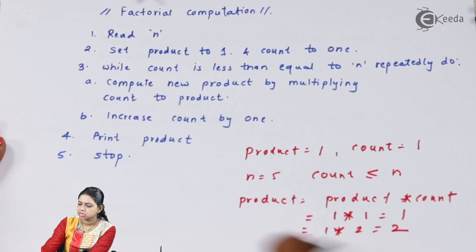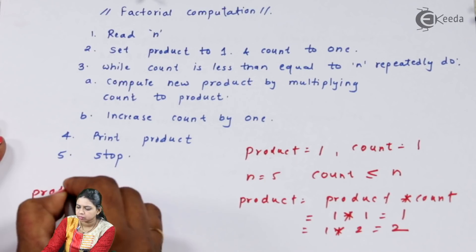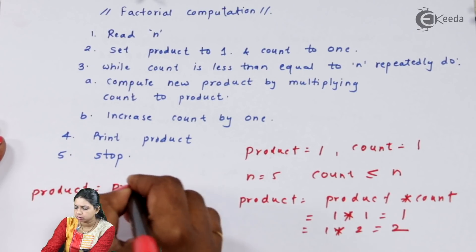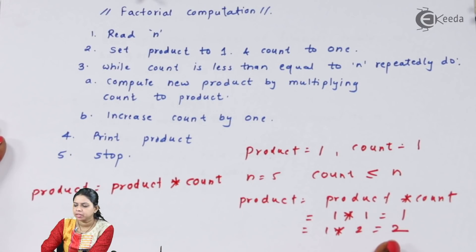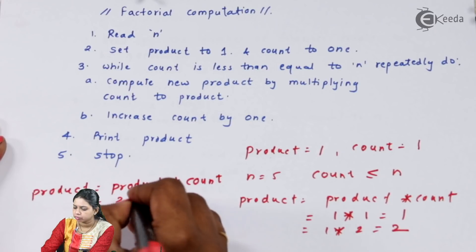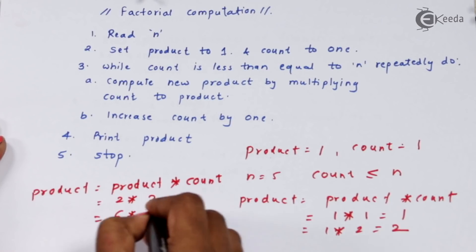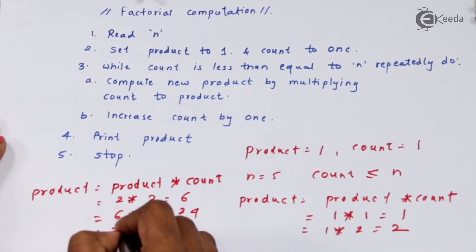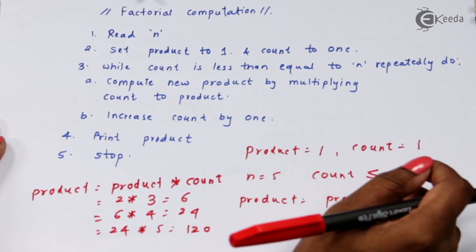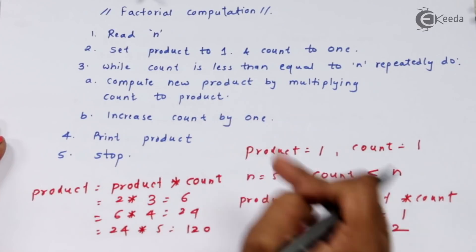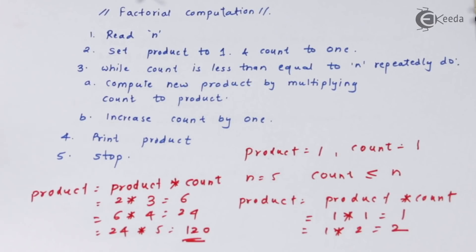When count increments to 6, it is no longer less than or equal to 5, so you come out of the loop and print the product, which is 120. This is how I write an algorithm to compute the factorial. I hope you have understood this algorithm.